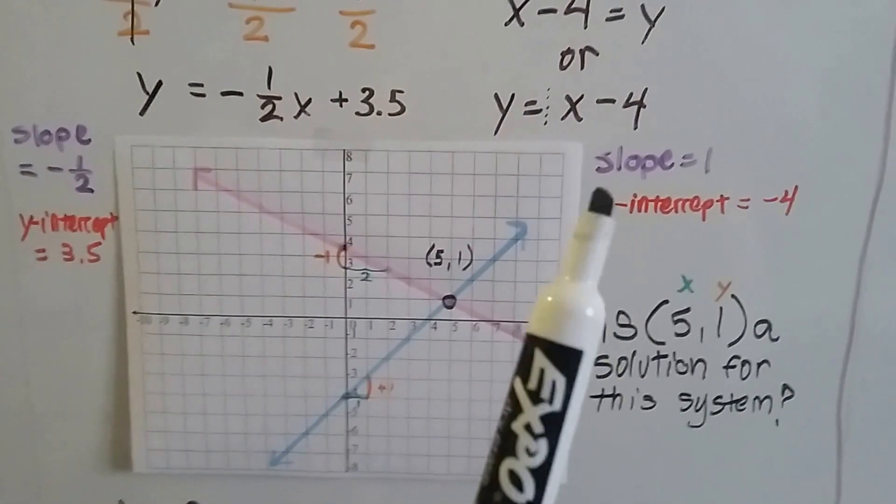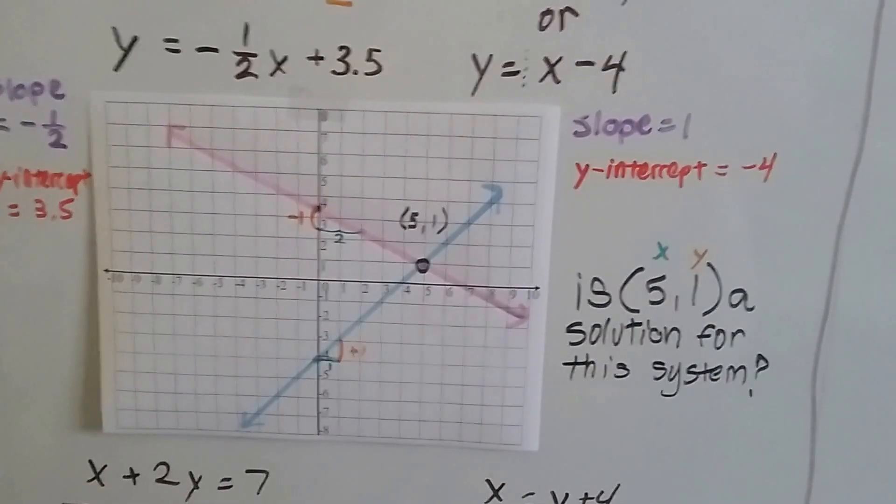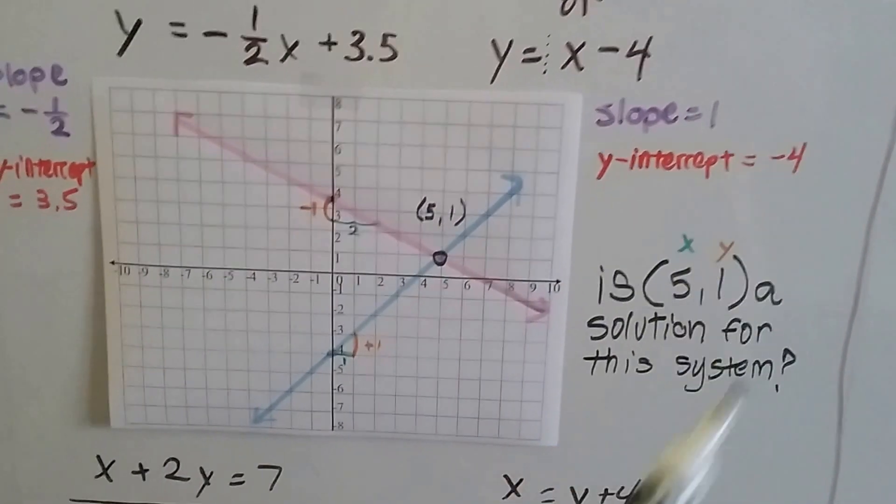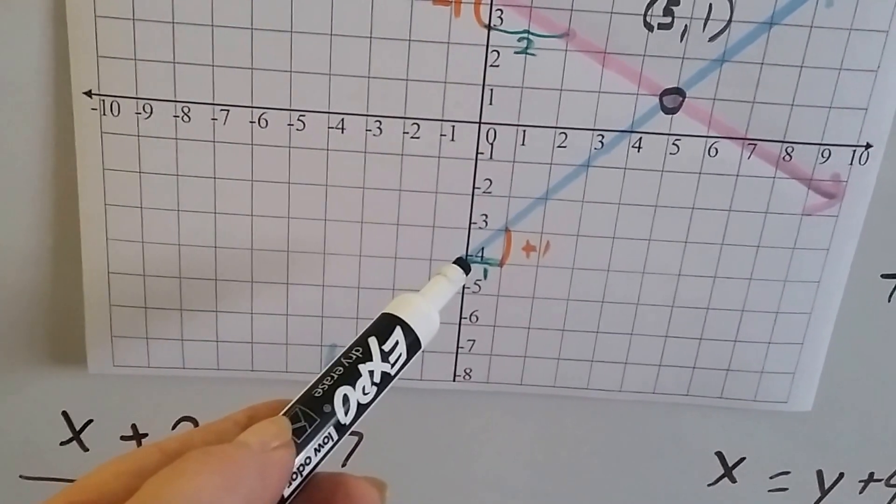Then we graphed this one. It's got a slope of a positive 1. So that means it's going to rise to the right. And its y-intercept is a negative 4. So if we put the point at negative 4, that's its y-intercept right here.